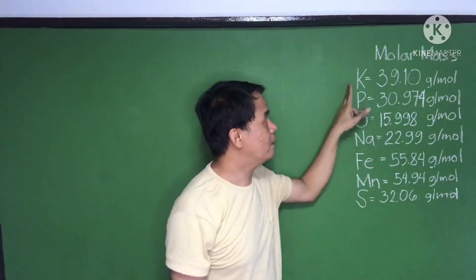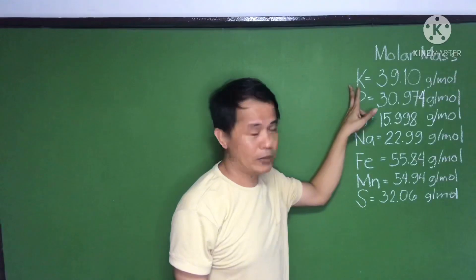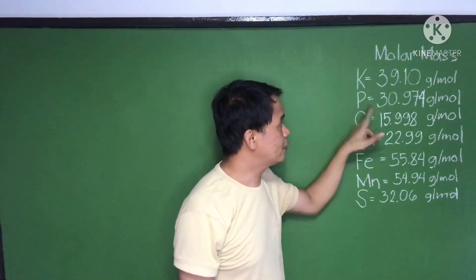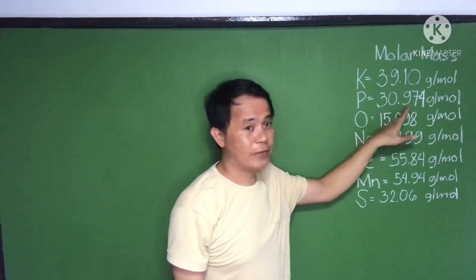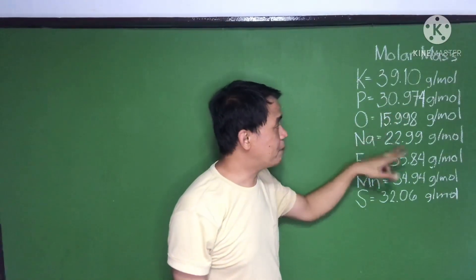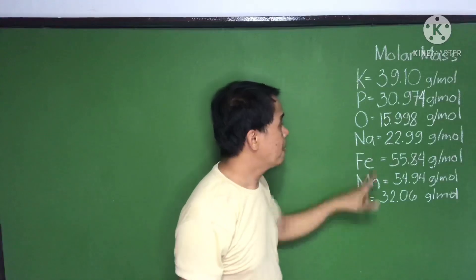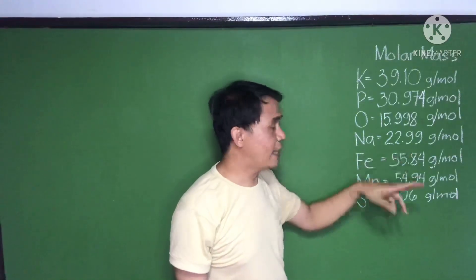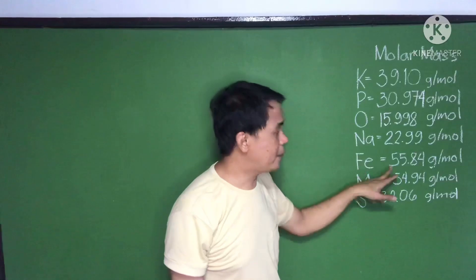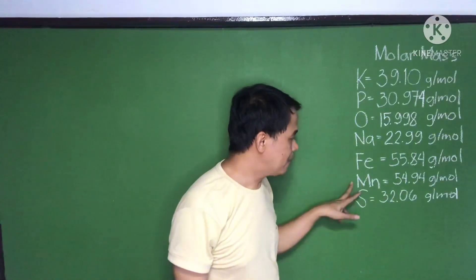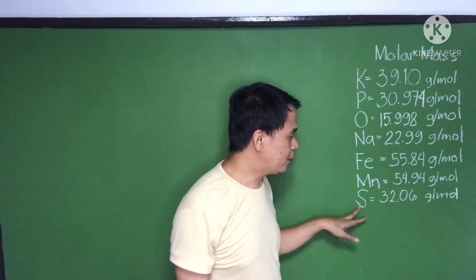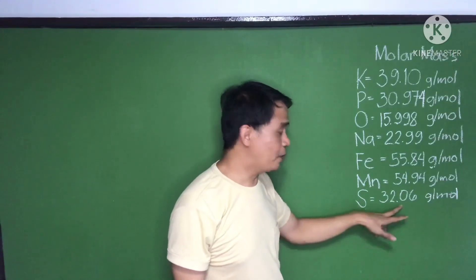For example: potassium, the molar mass is 39.10. Phosphorus, 30.974. Oxygen, 15.998. Sodium, 22.99. Iron, 55.84. Magnesium, 54.94. Sulfur, 32.06.